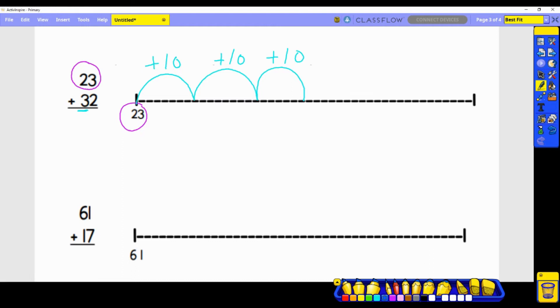Now looking in our ones place, how many ones are represented? There are two. One, two, and each one of these represents adding one. Now our first jump from 23, we're at 33. Next jump, 43. Next jump, 53. Now we have our two jumps that have a value of one. So that's from 53 to 54 and 55 is our last jump. So 23 plus 32 equals 55.